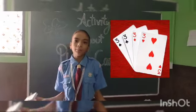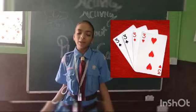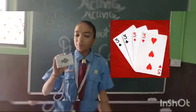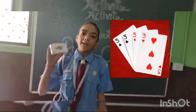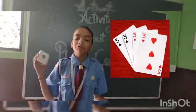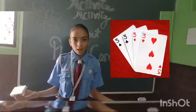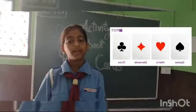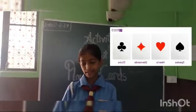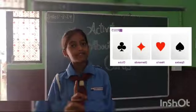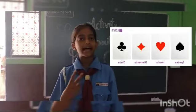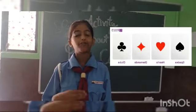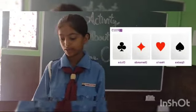I will discuss about the probability of playing cards. We have a deck of playing cards and a deck has 52 playing cards. There are 4 types of playing cards: first is Spade, second is Club, third is Heart, and fourth is Diamond.